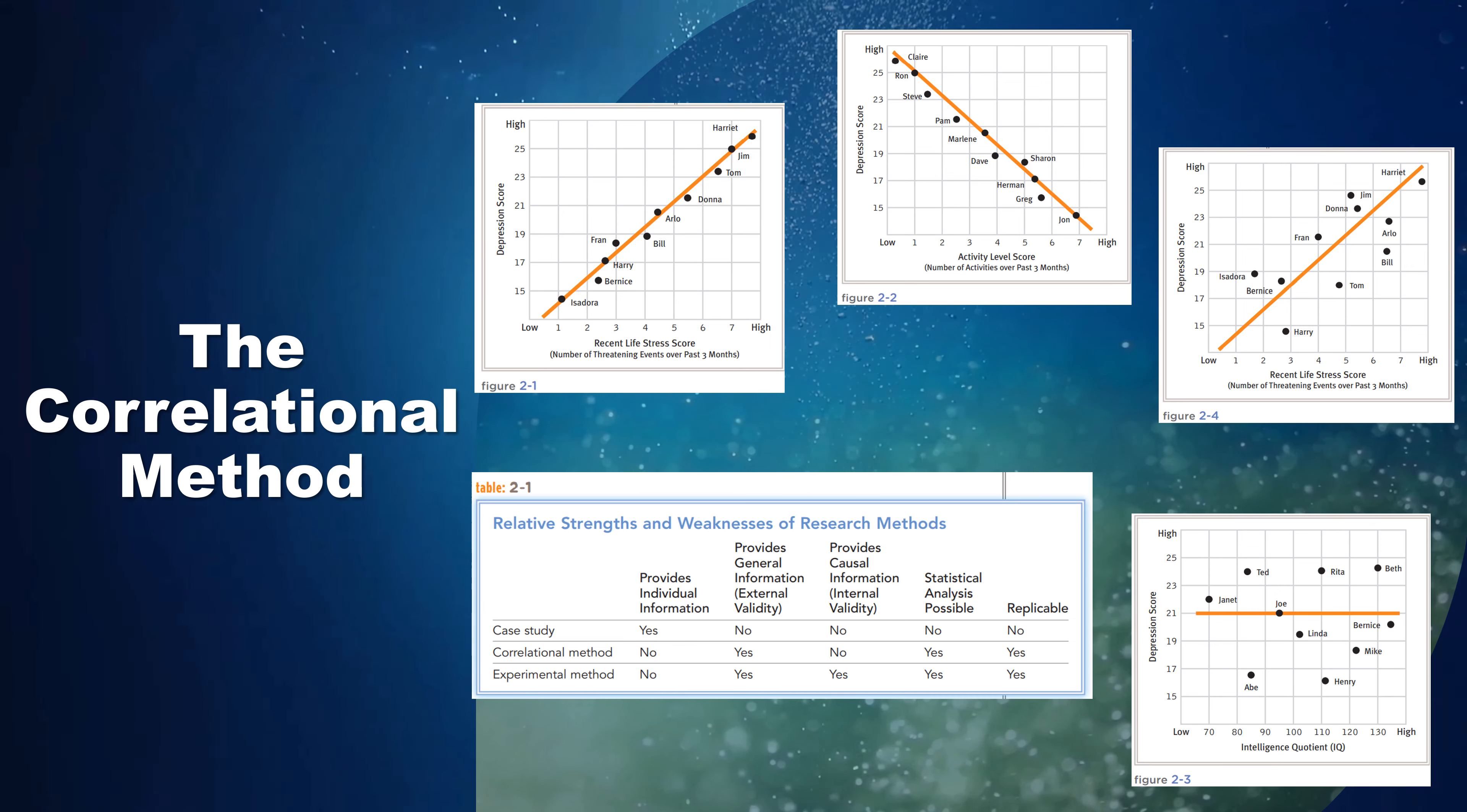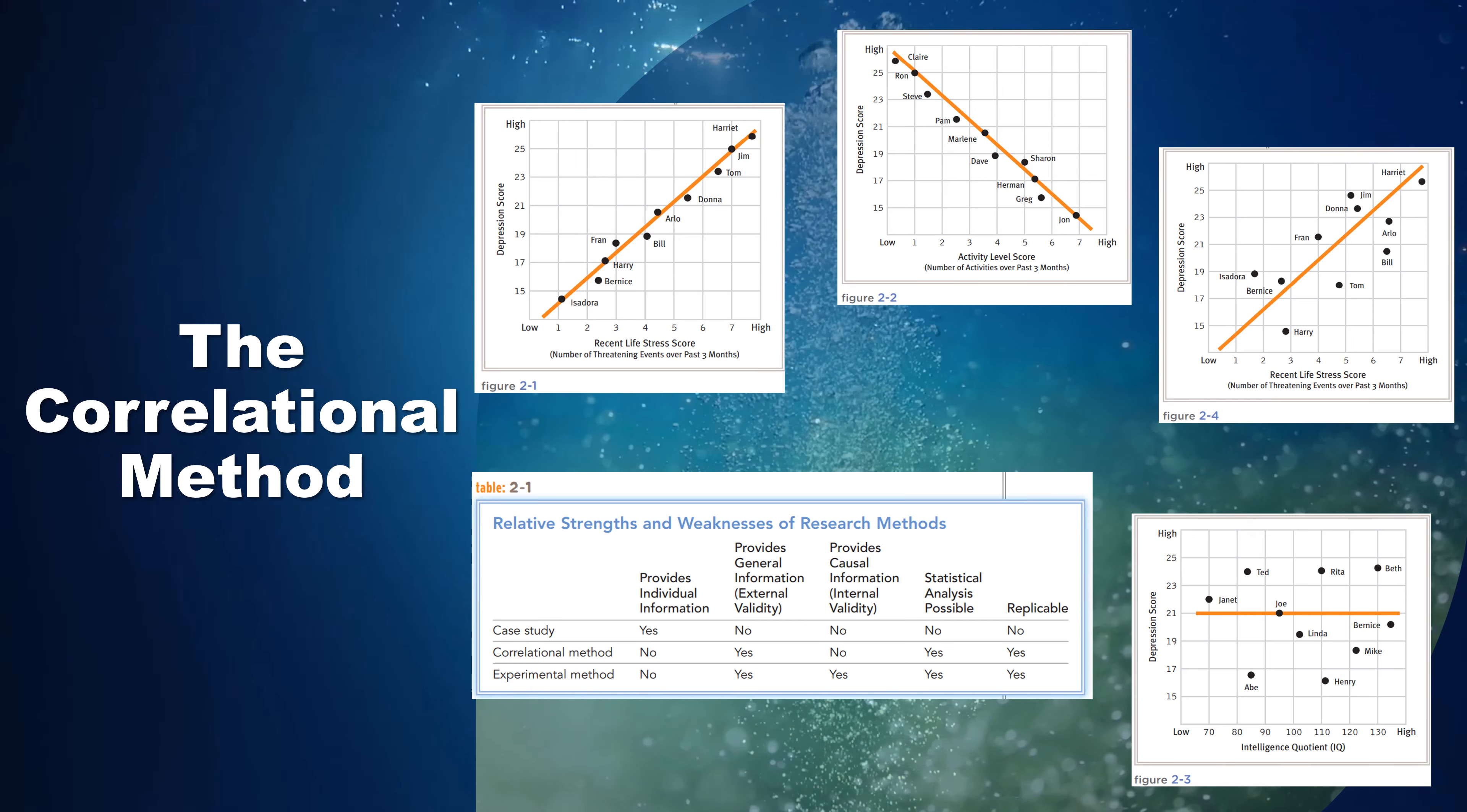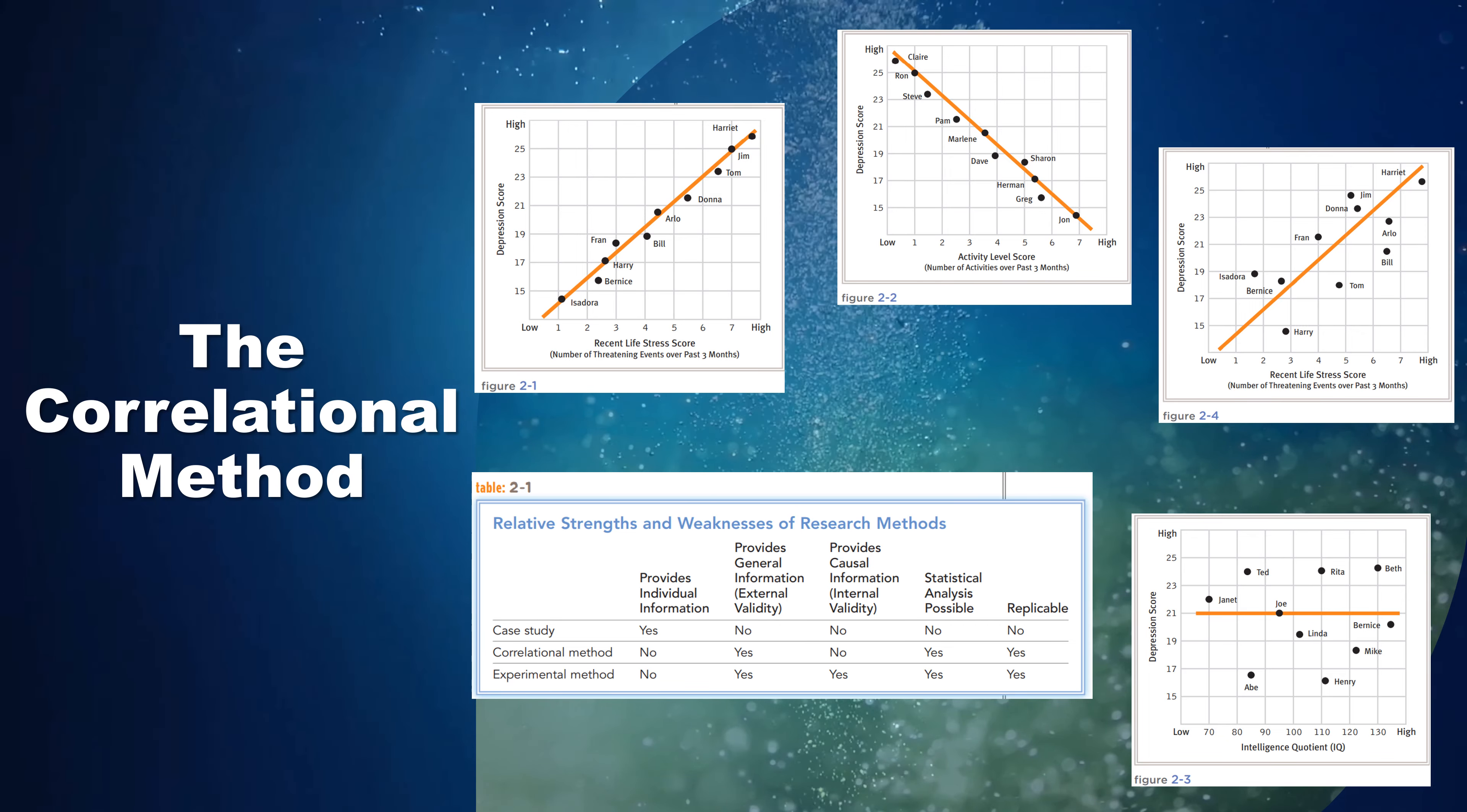Everyone's behavior is changeable, and many human responses can be measured only approximately. Most correlations found in psychological research, therefore, fall short of perfect positive or negative correlation. For example, one early study of life stress and depression, with a sample of 68 adults, found a correlation of +0.53. Although hardly perfect, a correlation of this magnitude is considered large in psychological research.